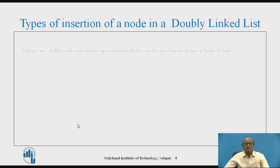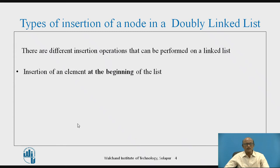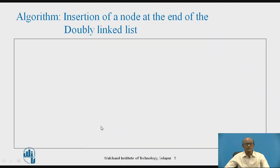There are three types of insertion as we have seen: insertion of an element at the beginning, insertion of an element at the end, and insertion of an element at a specific location. Today we will focus on insertion of an element at the end of the list.